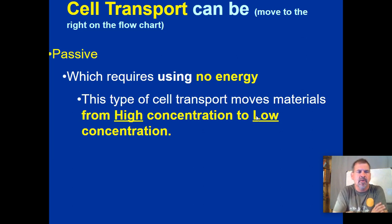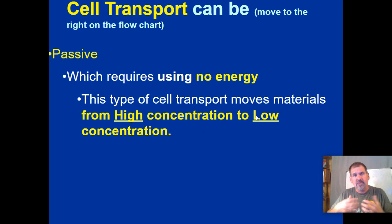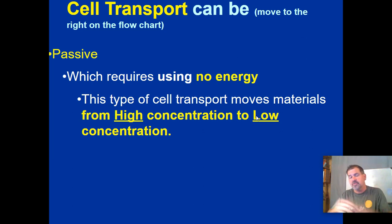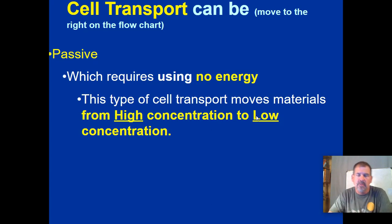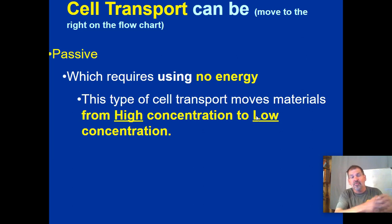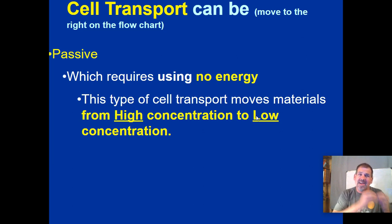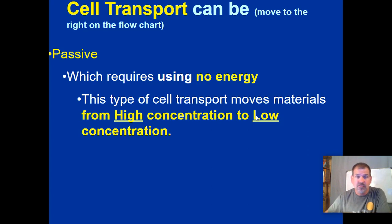Think of perfume sprayed on your clothes — it's high concentration on your skin and drifts out to where concentration is lower so people can smell it. Or food cooking in the kitchen: those molecules start at high concentration near the oven and drift out to fill the hallway, living room, and other rooms. Particles naturally move from high concentration to low concentration — this doesn't require any energy.